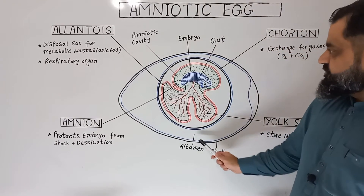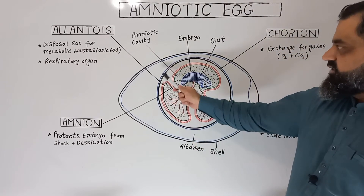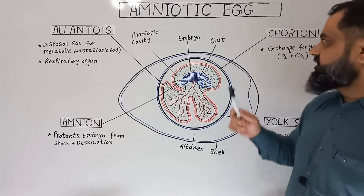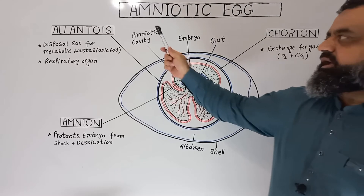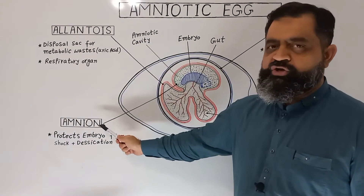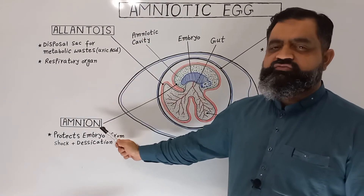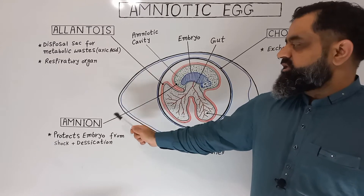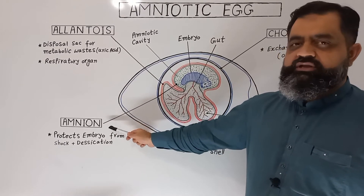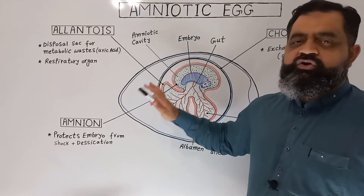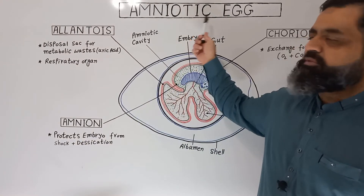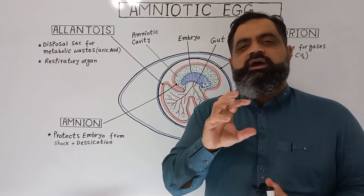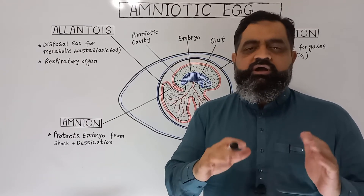Inside these two layers is the real egg, which contains three major layers. The first layer is the Chorion, the second is the Allantois, and the third is the Amnion. Due to the presence of the Amnion around the embryo, the egg of these animals is known as the amniotic egg. If we look at the etymology, Amnion means a cup or bowl filled with fluid.